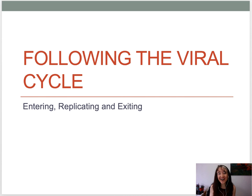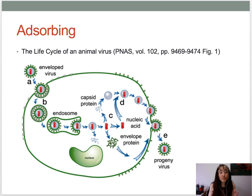Let's start by looking at entry. First, here's a generalized picture showing the overall life cycle of an animal virus, found in the Proceedings of the National Academy of Science. We see the process of entry, then uncoating — in which the nucleocapsid's protomers release the nucleic acid — then replication, and then exit.